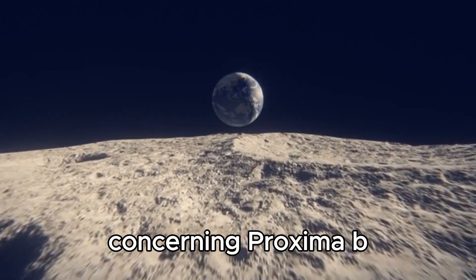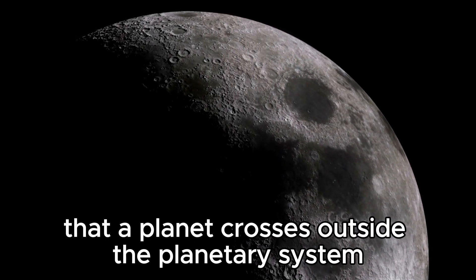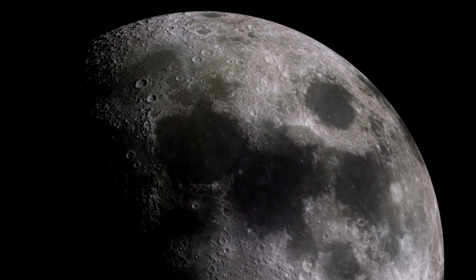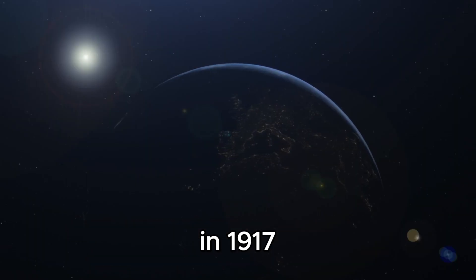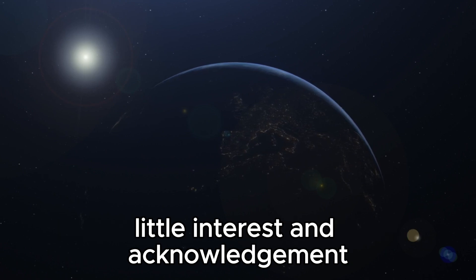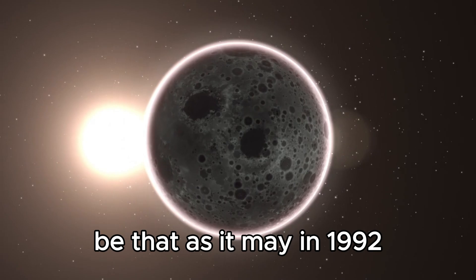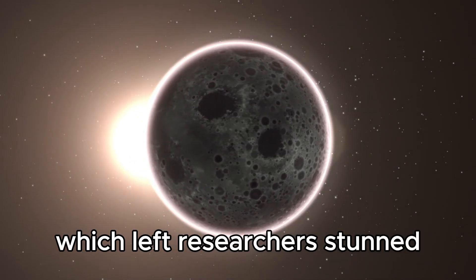As for Proxima B, it is a super-Earth and an exoplanet, implying that the planet exists outside the solar system. The absolute first conceivable proof of an exoplanet was viewed in 1917, despite the fact that it managed to stir little interest and acknowledgment. However, in 1992 the main confirmed detection occurred, which left researchers stunned.